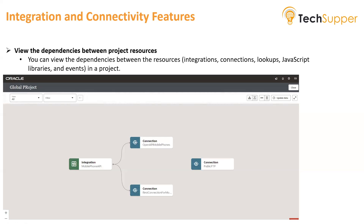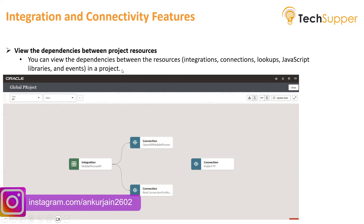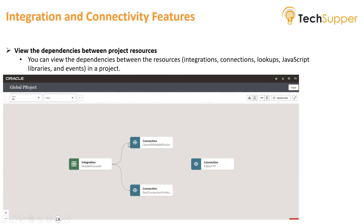Fifth, view the dependencies between project resources. You can view the dependencies between resources — integrations, connections, lookups, JavaScript libraries, and events — in a project. In the sample screenshot you can see integrations and connections, but all resource types including lookups, JavaScript libraries, and events can appear here.